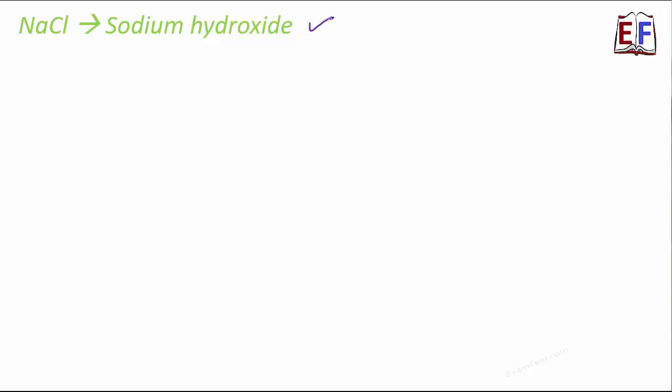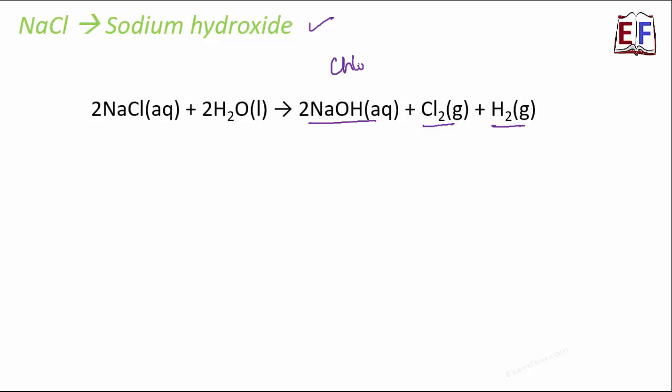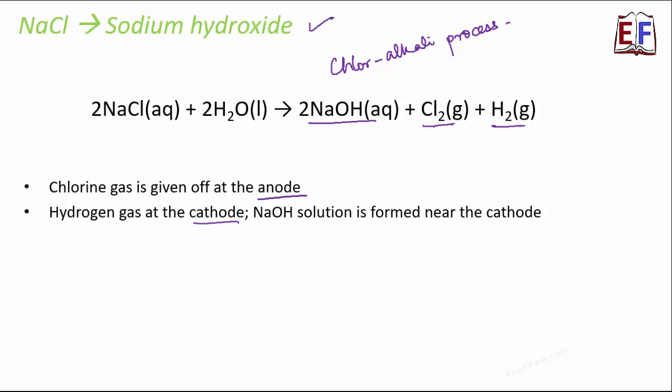The first one being sodium hydroxide. How do we produce sodium hydroxide from sodium chloride? By the process of electrolysis. When electricity is passed through aqueous solution of sodium chloride, it decomposes to form NaOH. And along with that, chlorine and hydrogen gases are released. This process is often termed as chloralkali process. During this process, chlorine and alkali, that is NaOH, are produced. When you look at this entire process of electrolysis, you see that chlorine gas is given off at the anode, whereas hydrogen gas is given off at the cathode and NaOH solution is also formed near the cathode.